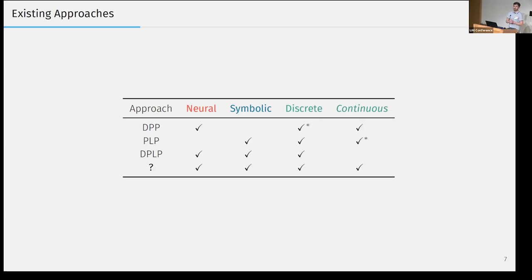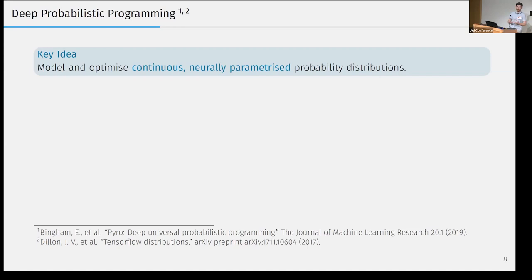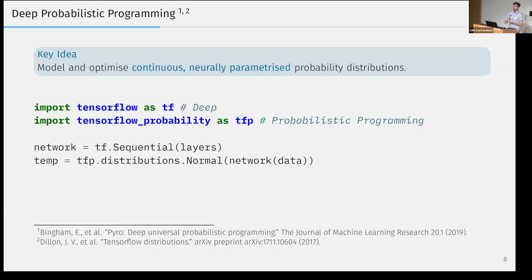Before we can introduce DeepSea ProbLog itself, we do have to acknowledge some previous work and approaches that try to integrate these paradigms to some degree as we are heavily influenced by these approaches. And in the end, we will see how DeepSea ProbLog ticks all of the boxes without any asterisks. We start with deep probabilistic programming where the key idea is to just model or be able to model and optimize neurally parameterized distributions, mainly continuous ones. And this is best illustrated with an example program. Usually you just import your favorite deep neural network library, TensorFlow or PyTorch, together with the corresponding probabilistic programming library such as Pyro or Probability. You define your neural network as a sequence of layers, and you use its output as the parameters of a distribution. In this case, we modeled the temperature as a normally distributed random variable.